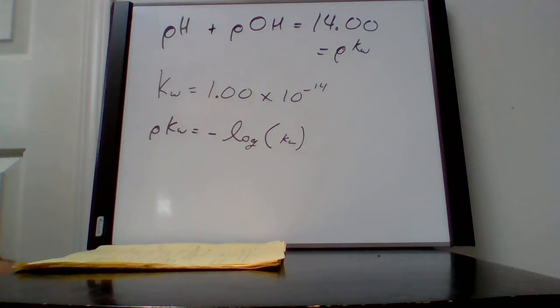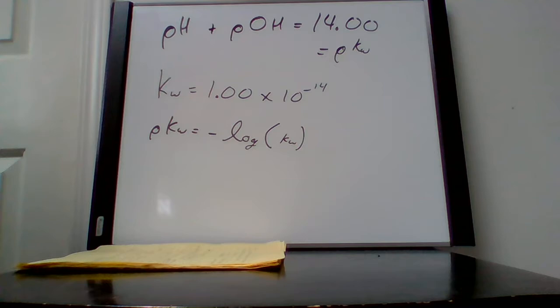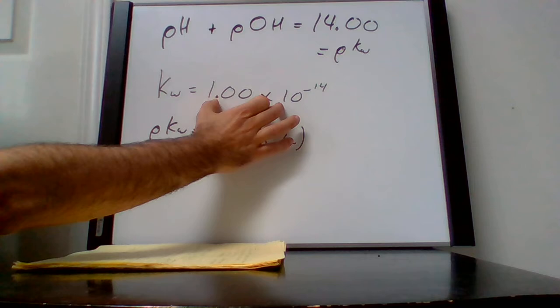We've heard the idea of pH before but never had to calculate it. The pH is the negative log of the H3O+ concentration. pH plus pOH equals 14, or pKw. I want to show you on the calculator exactly how to enter these values to go from Kw to 14.0.